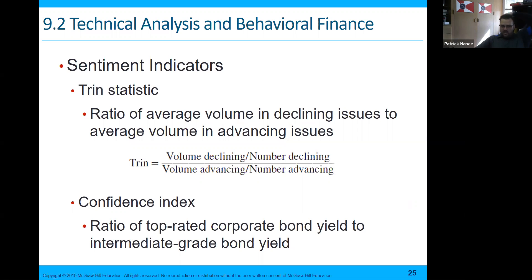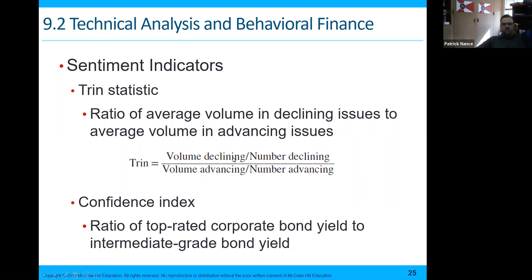Sentiment indicators. The trin statistic is the ratio of average volume in declining issues to average volume in advancing issues — so whether we're buying more in volume when numbers are declining or advancing. The ratio is volume declining over number declining, divided by volume advancing over number advancing. Are people buying when it's going up or selling when it's going up? And are people buying when it's going down or selling when it's going down?